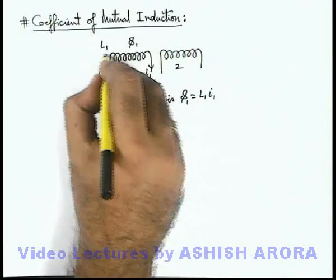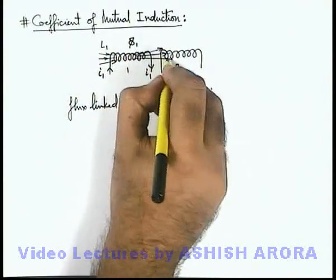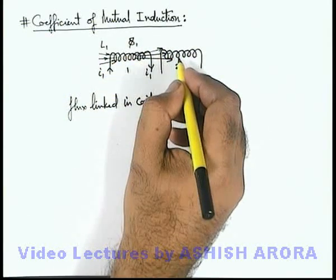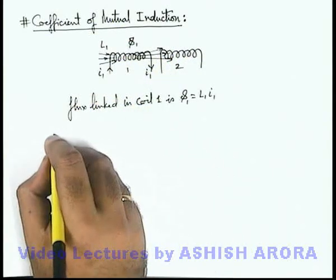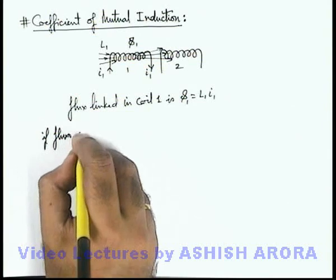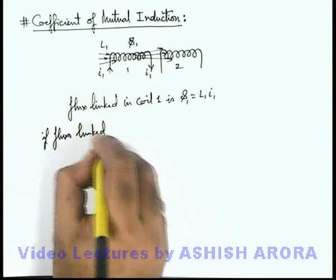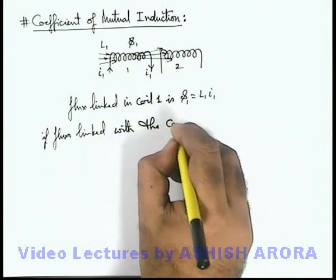And when the flux is developed in the coil, here we can see that some flux will also pass through the second coil as it is placed nearby. So we can directly write that if flux linked with the second coil, or coil 2,